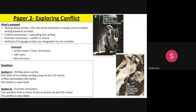Paper two is called Exploring Conflict and for this you only look at two texts. The first is The Great Gatsby, and your Bridging Project is also based on this text. The second is the play A Streetcar Named Desire, one of my favourite plays.